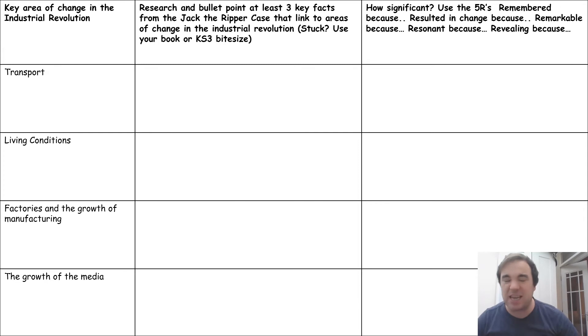And finally the growth of the media. This is especially important in the Jack the Ripper case and as we know from our dear boss lesson the role that the media played in let's say at best neutral role at worst perhaps even maybe propagated and extended some of the myths. And then on the second column just explain how significant they were using at least one of the five R's for each entry.